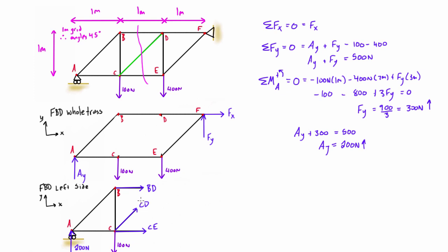To solve this, it's the same process as any other 2D free body diagram. We'll start with the sum of forces in the x direction and set that equal to zero. We have BD plus CD cos 45 plus CE, all equal to zero. If you remember, we're looking for CD here.